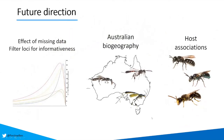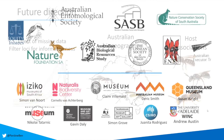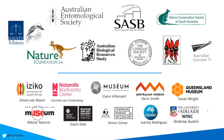For future directions, I really need to continue checking and filtering this data to make sure those sequencing mishaps aren't causing any artificial signal. I'd really like to explore the Australian biogeography a little bit more, because there are definitely some interesting patterns, and also look at the host associations. I'd like to thank the following funding bodies for contributing to the project, and also thank all of the collection managers and researchers for the donation of material.